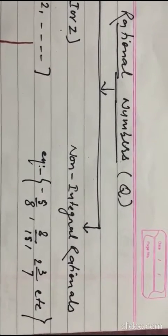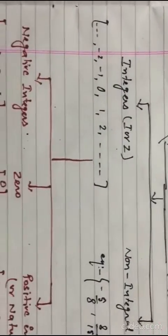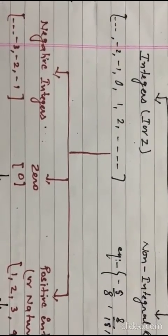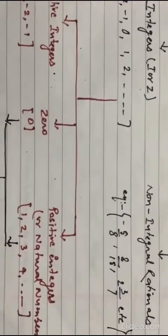These are some examples of non-integral rational numbers. Now see, further, the integers are divided into three parts: negative integers, 0, and positive integers.